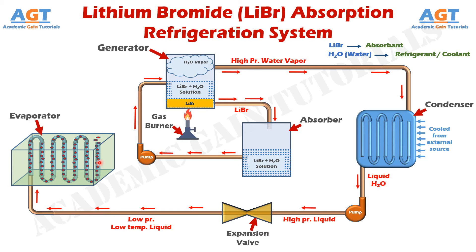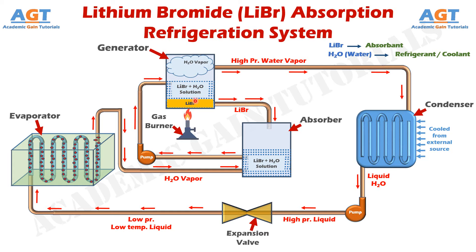After that, this low pressure water vapor will leave the evaporator and enter the absorber again through this connecting pipe. This low pressure water vapor will then form a solution with the lithium bromide present in the absorber. The pump will again send this solution to the generator, where the water and lithium bromide will be separated again by heat, and the whole cycle will keep repeating again and again. Thus refrigeration will be happening continuously in the evaporator. This is how a lithium bromide absorption refrigeration system works.